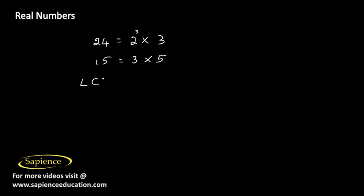Now for finding the LCM we need to write down all the prime factors. We have 2, 3, and 5, and we need to choose the highest power for each of the prime factors. So in the case of 2 it's 2 to the power 3, and in the case of 3 and 5 the highest power is 1.